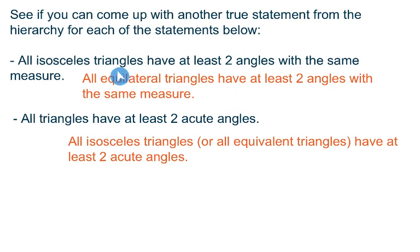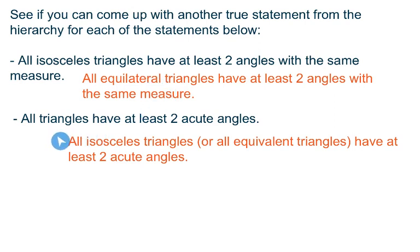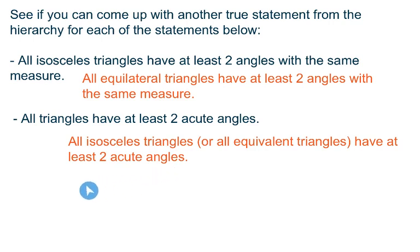Here are some answers. For the first one — all isosceles triangles have at least two angles with the same measure — I could say all equilateral triangles also have at least two angles with the same measure, because equilateral is a subgroup of isosceles. For the second — all triangles have at least two acute angles — I could say all isosceles triangles or all equilateral triangles also have at least two acute angles, because if the top group has a property, so do the ones below it in the hierarchy. I hope that all makes sense. That's it for this lesson.